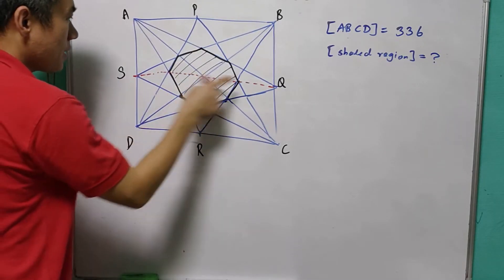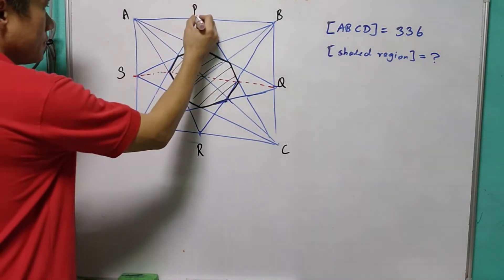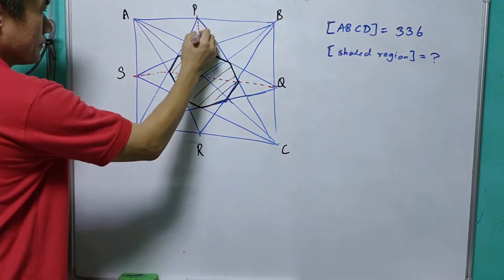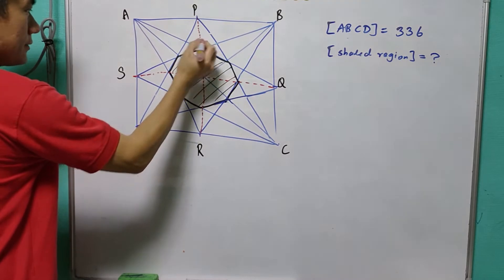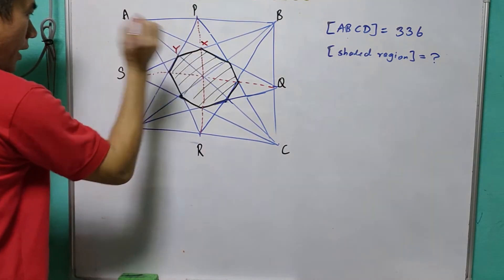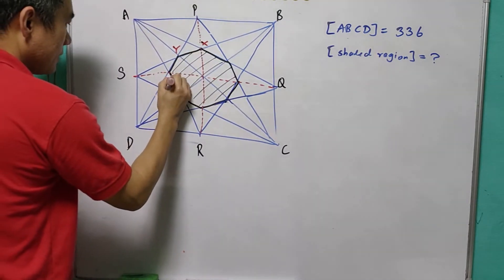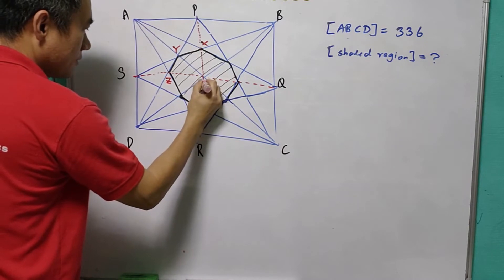First, we will join the segment RQ and PR. Then we mark this point as X, and this as Y, and this is Z, and the center as O.